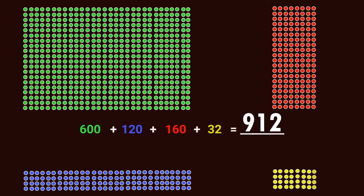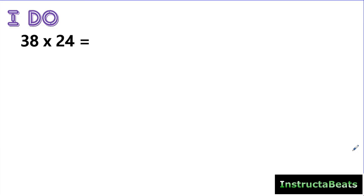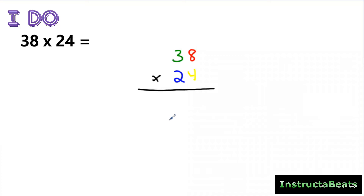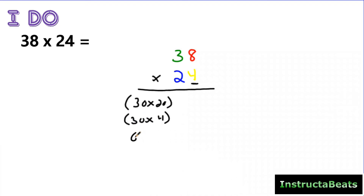Let's take a look at this same problem but what it looks like mathematically. Just like we talked about in our last video with two- and three-digit factors by one-digit factors, we want to make sure that we line up our factors vertically — it's going to make it easier to transition into other ways to multiply. I color-coded it so you could see what we just did with the array. Now that we have them lined up vertically, we're going to break them apart the same way: 30 groups of 20, 30 groups of 4, 8 groups of 20, and 8 groups of 4.